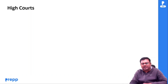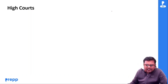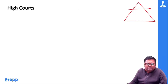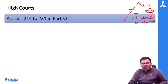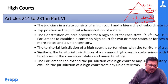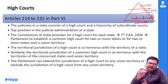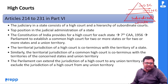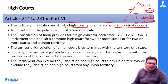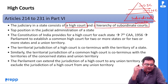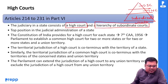देखिए, High Court — in India we have an integrated system of judiciary। सबसे top में Supreme Court है, apex organization, then High Court, उसके बाद Subordinate Courts होते हैं। इस session में हम बात कर रहे हैं High Courts की — basically Part 6, Article 214 to Article 231। अगर हम state judiciary की बात करते हैं, तो सबसे top में High Court मिलेंगे, और उसके नीचे hierarchy of Subordinate Courts होती है। High Court की state में top position होती है in the judicial administration.